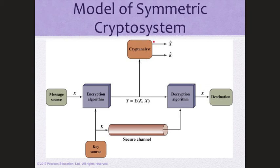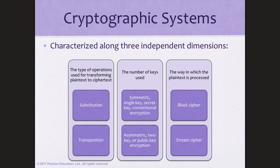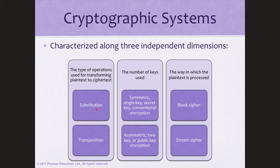There is also a cryptanalyst trying to hack the system — trying to figure out the actual data, and particularly the key. Because if the key is known and the encryption method is already known, every transmitted message can be decrypted. There are two ways of doing cryptography: substitution, where the ciphertext is a function of combining the key and the plaintext, and transposition, where the function is a permutation of positions.